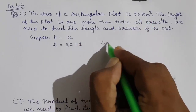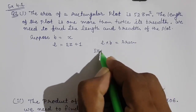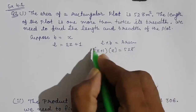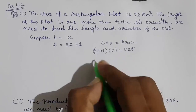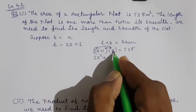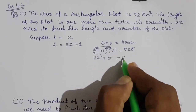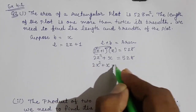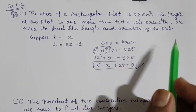The area is 528, and area of rectangle equals length times breadth, so (2x + 1) × x = 528. Multiplying — this is a binomial times a monomial — we get 2x² + x = 528. Taking 528 to the other side: 2x² + x − 528 = 0. This is our quadratic equation.